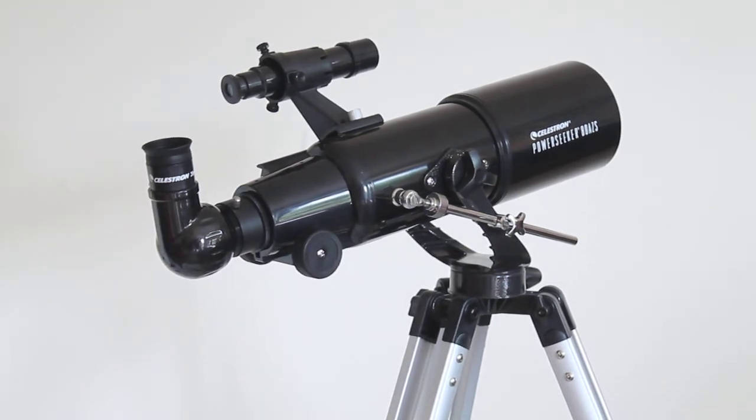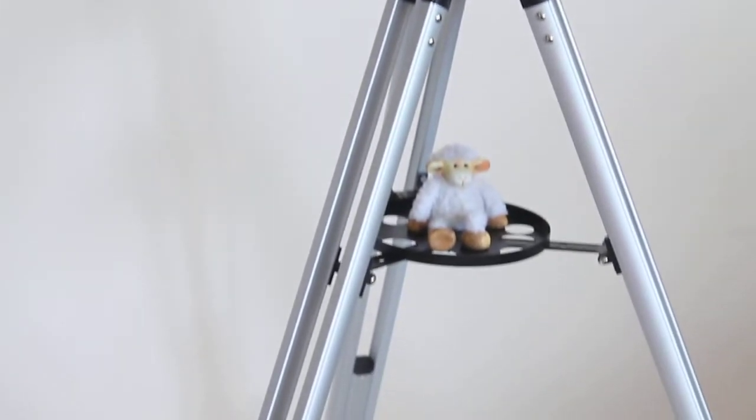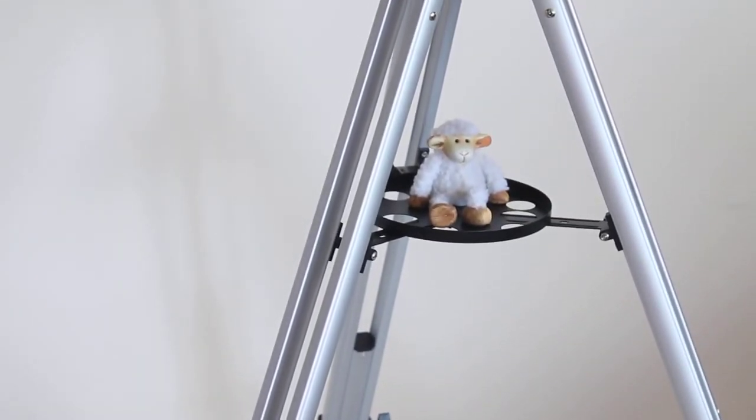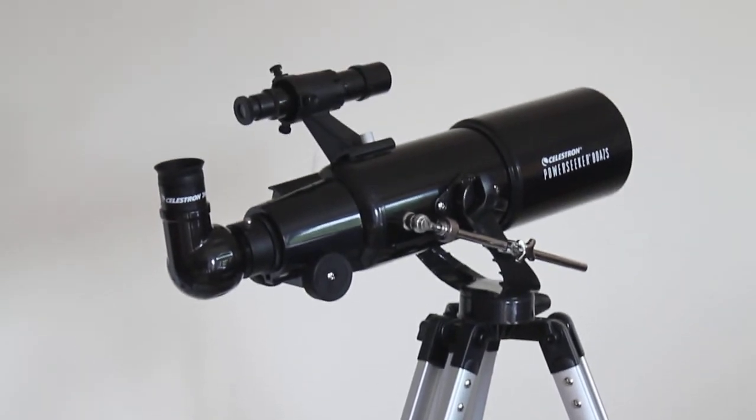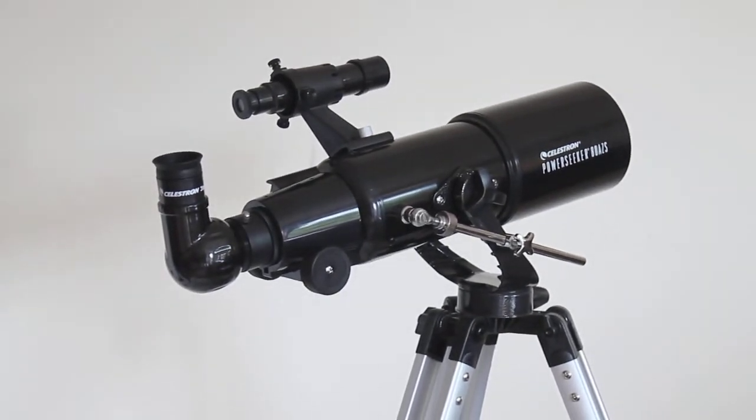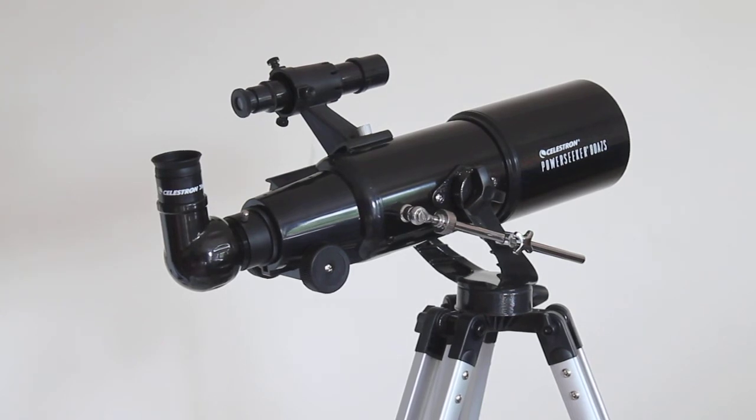It comes with a basic AZ mount or alt-azimuth. The legs are the same as you get on the Powerseeker EQ telescopes but with an AZ head.